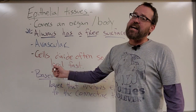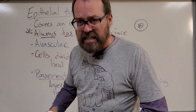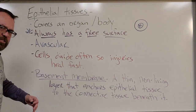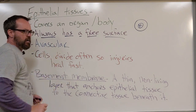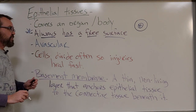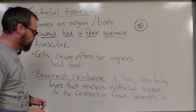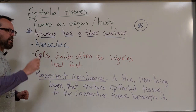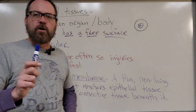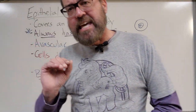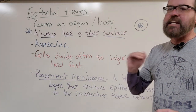Epithelial tissue is also avascular, meaning there are no blood vessels in it. It's completely dependent on the tissue beneath it to feed it, take away waste products, bring nutrients and oxygen, and get rid of carbon dioxide. With epithelial tissues, cells also divide super fast, so injuries heal really quickly. And the epithelial tissue extends all the way down to the basement membrane — a thin, non-living layer that anchors the epithelium to the connective tissue underneath.